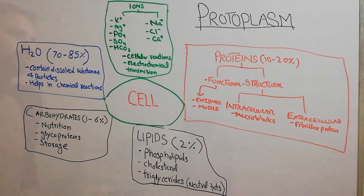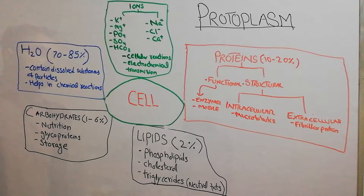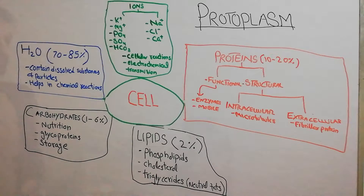Today we are starting a new lecture about the cell and the components of the cell. We know that there are about 100 trillion cells inside the human body. The cell is the structural and functional unit of the human body, because all the organs of the human body — like heart, lungs, liver, and kidneys — are basically made of cells, and the functions of those organs also originate from the cells making up those specific organs.